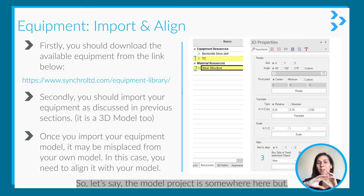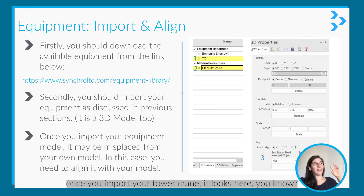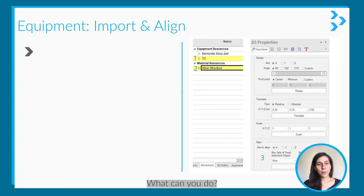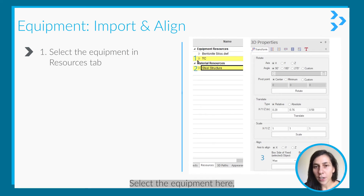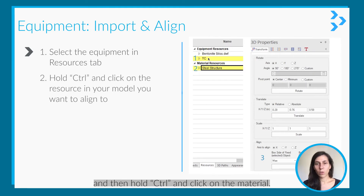Let's say the model project is somewhere here, but once you import your tower crane, it appears elsewhere. What you can do is select the equipment here — select the tower crane in the equipment resource and then hold Control and click on the material.